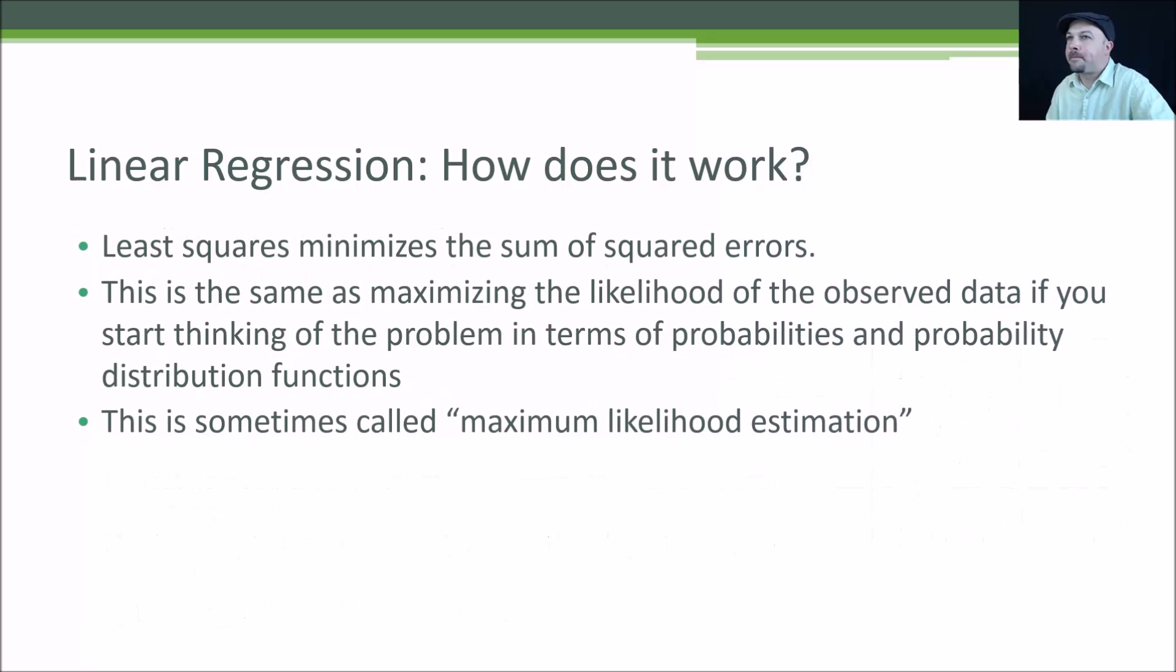Remember, least squares minimizes the sum of squared errors from each point to the line. Another way of thinking about linear regression is that you're defining a line that represents the maximum likelihood of an observation, the maximum probability of the Y value being something for a given X value. People sometimes call this maximum likelihood estimation. It's just another example of people giving a fancy name to something very simple. If you hear someone talk about maximum likelihood estimation, they're really talking about regression.